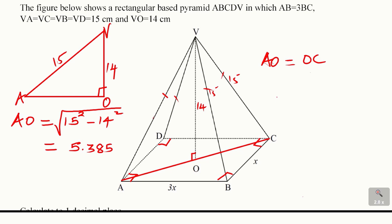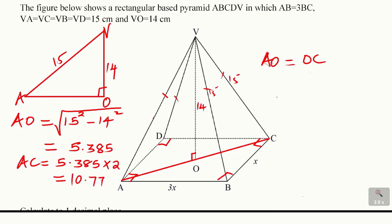AO is 5.385. OC is the same measurement. So AC equals 5.385 multiplied by 2, giving 10.77 centimeters. That is the length of AC. Now having AC, we can consider triangle ABC and calculate X.